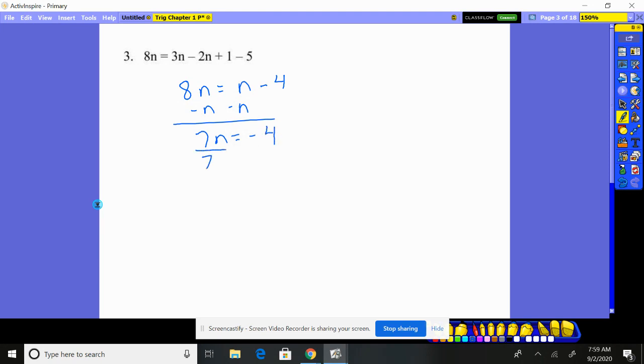7n equals negative 4. Now divide by 7. Divide by 7. Negative 4 sevenths is our answer.